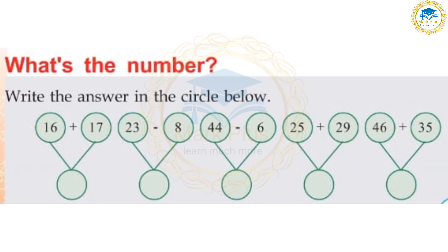What's the number? Circle the answer below. First: 16 plus 7 is 23. Next: 23 minus 8 is 15. Next: 44 minus 6 is 38. Next: 25 plus 29 is 54. Next: 46 plus 35 is equal to 81.